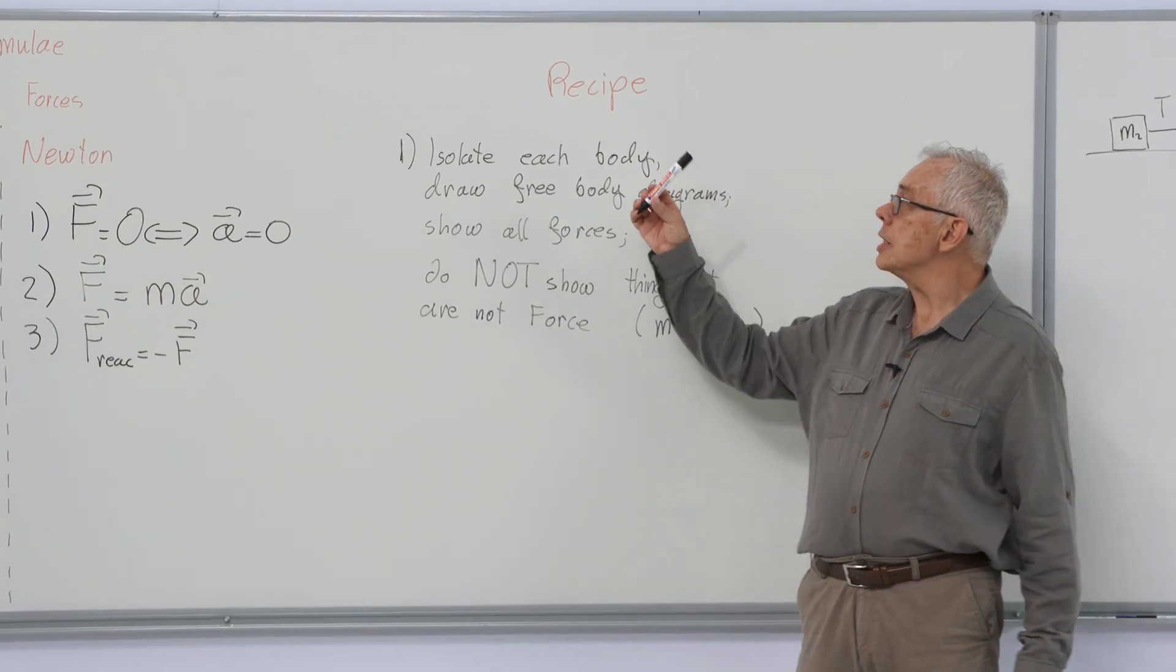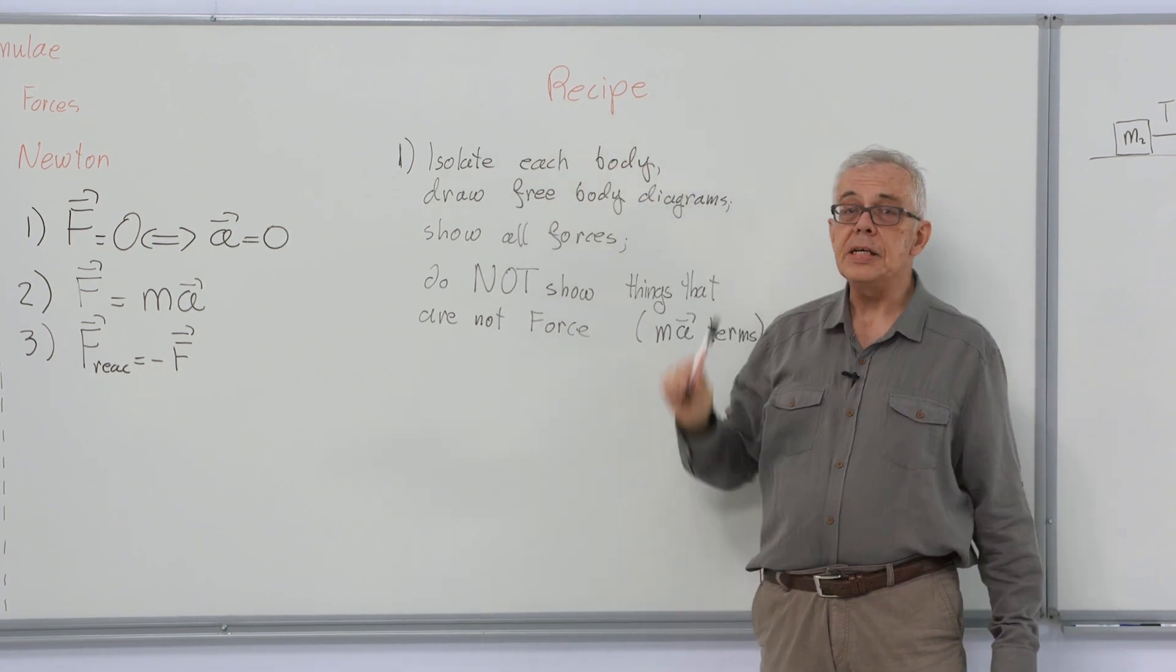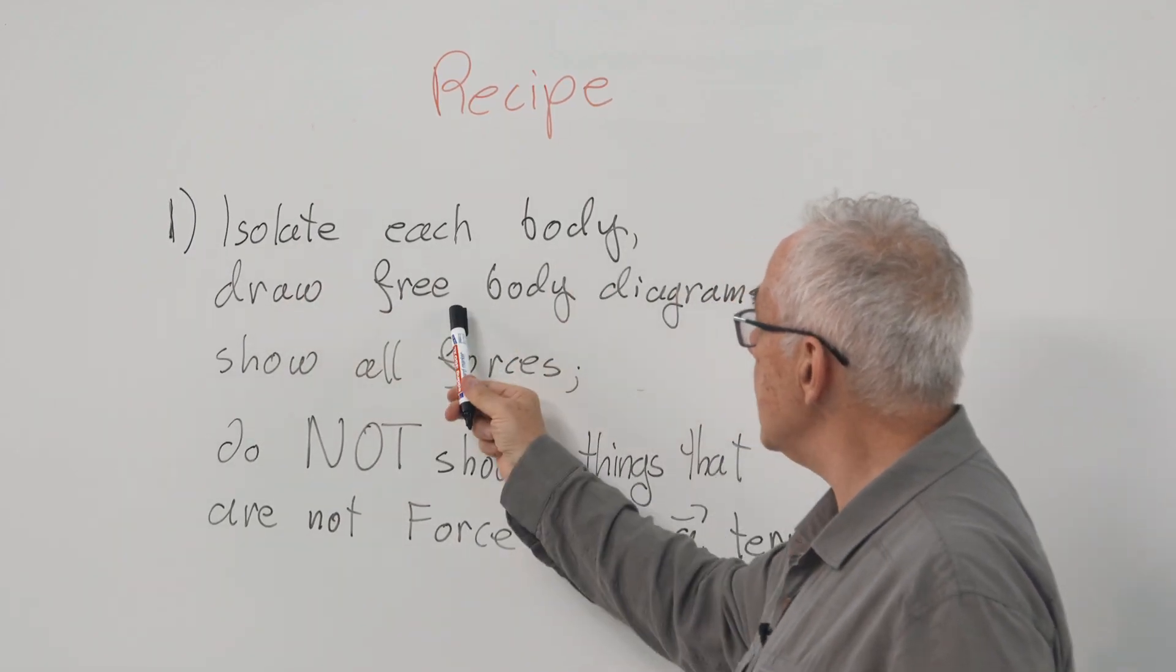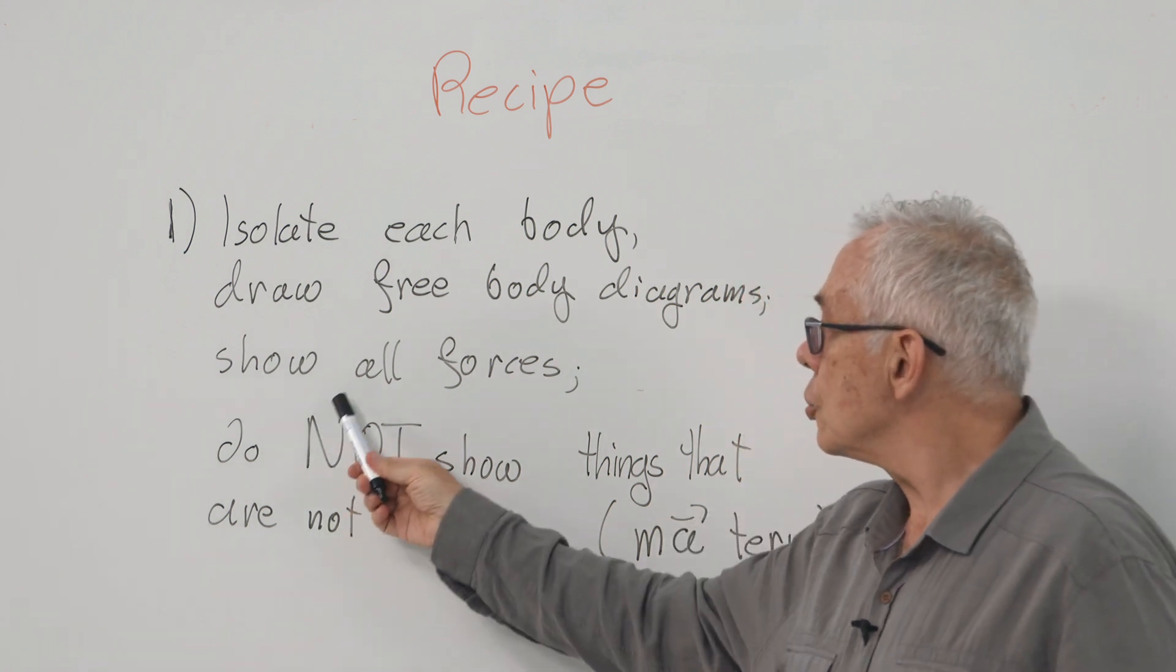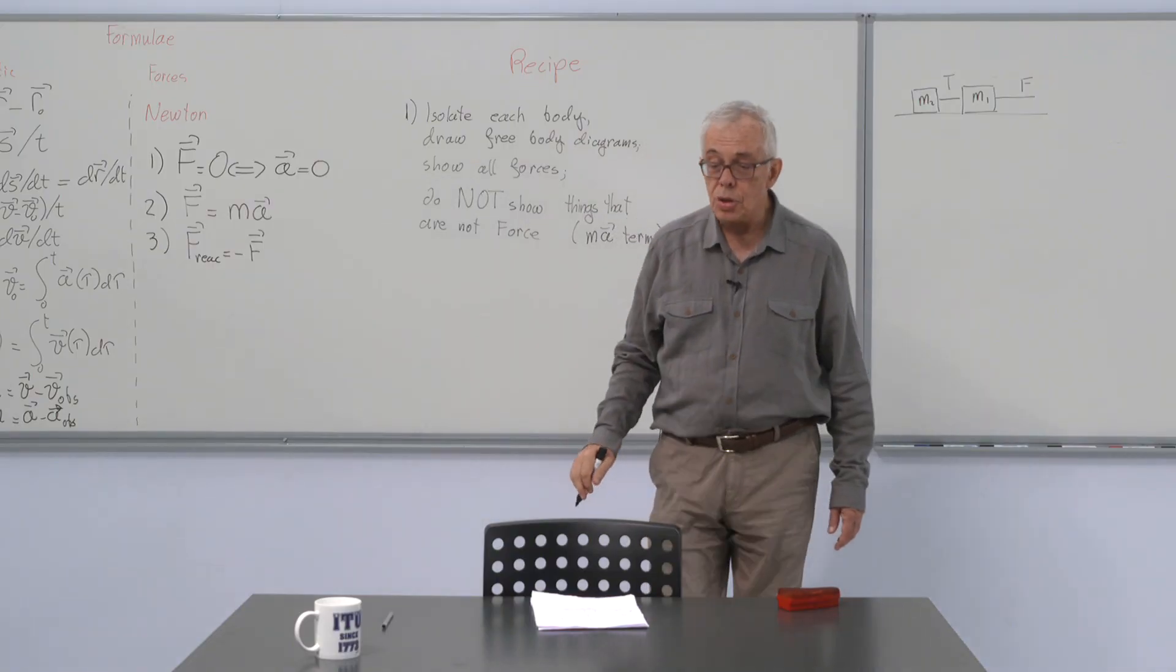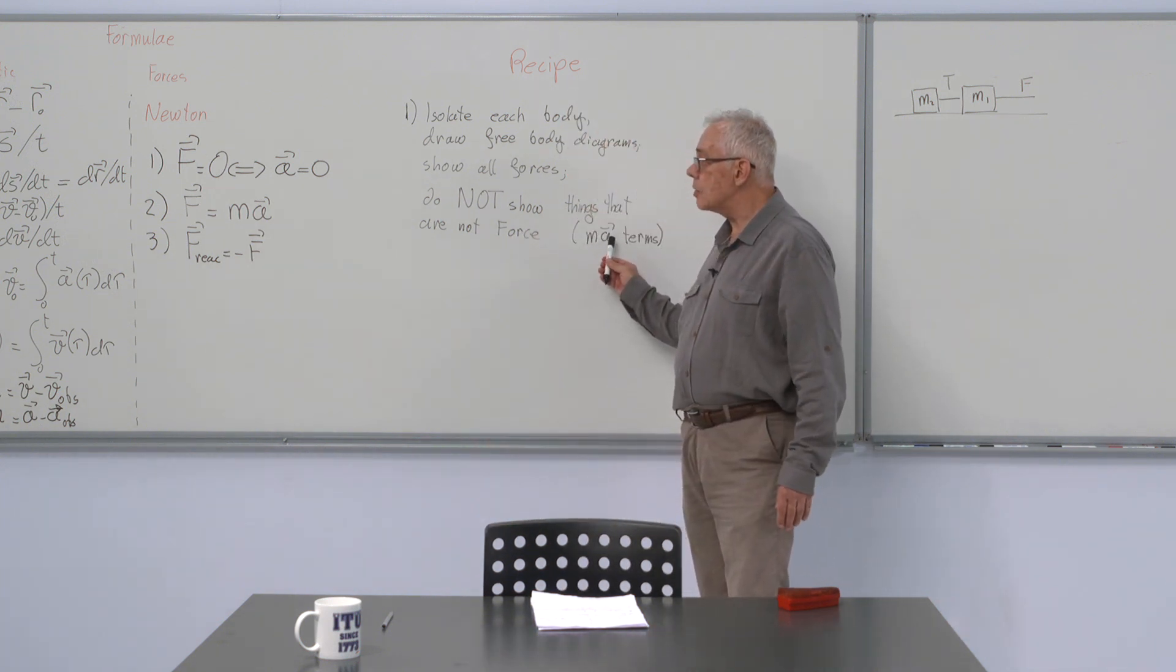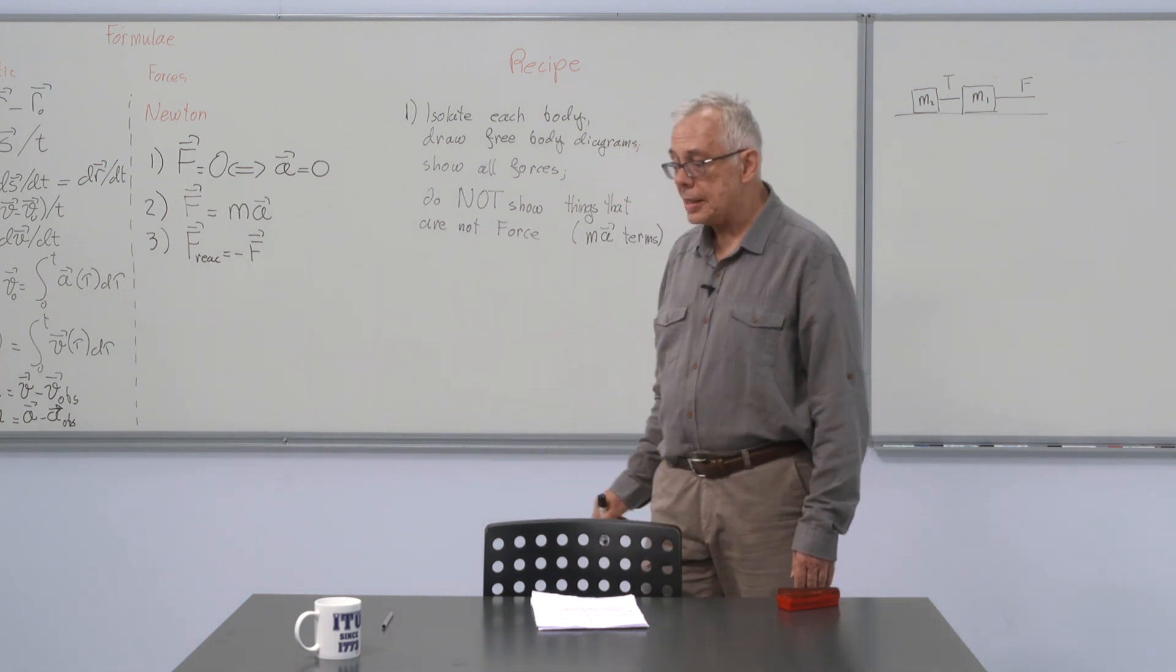We will look at some examples, but before, let's see our recipe for solving problems. We will first isolate each body, draw a free body diagram for it, show all forces, and do not show things that are not forces. Especially Ma is not force, so we will not show it.